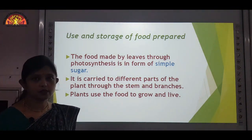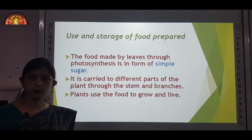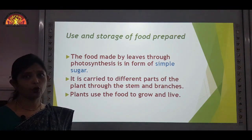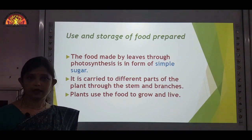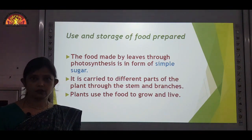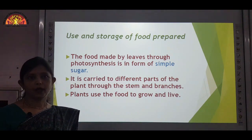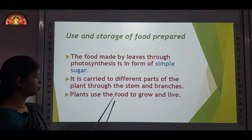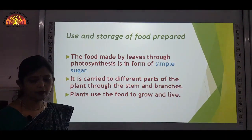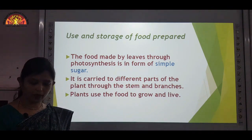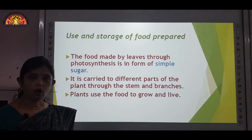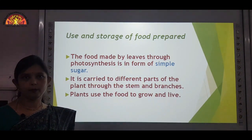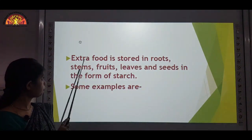Stem and branches help to transport this food to the different parts of the plant. As we need food to grow and get energy, similarly all the parts of the plants also need energy for doing their work. This food is supplied to different parts of the plant through the stem and branches. Plants use the food to grow and live. Because plants produce this food and use what is required by them, the rest of the food they store.